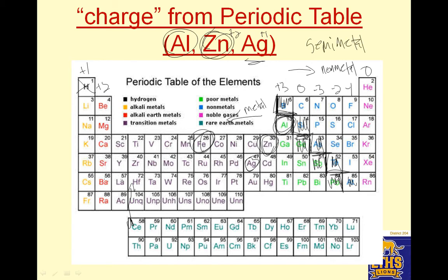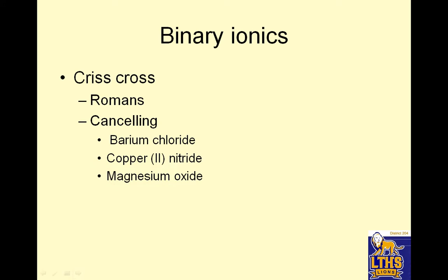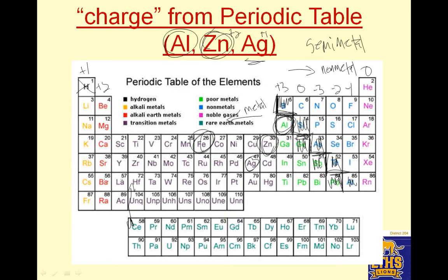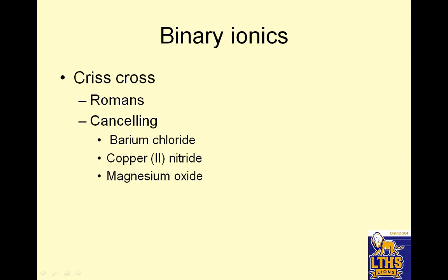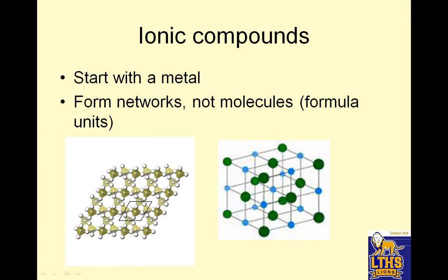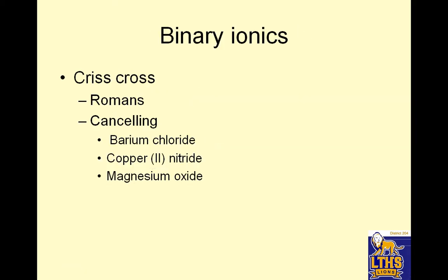So ionic compounds always start with a metal — something on the left — and they always have a positive charge. They form networks, not molecules. Binary ionics: you're going to crisscross. Some metals are Roman metals, meaning we don't know their charge — you need a Roman numeral to identify it. For example, barium is plus 2, chloride is in the minus 1 column, so I'd have two chlorides: BaCl₂. Do you see how that 2 and that 1 crisscrossed?